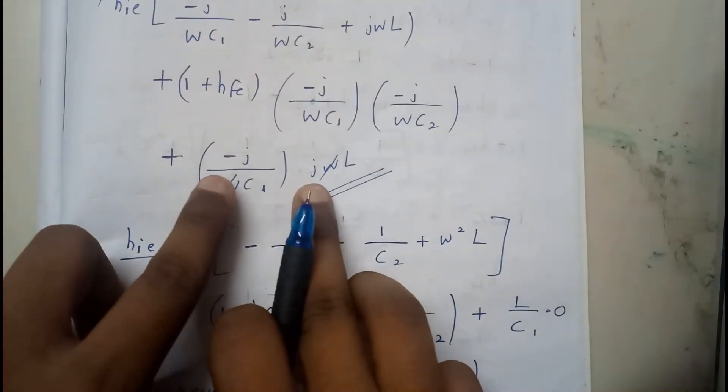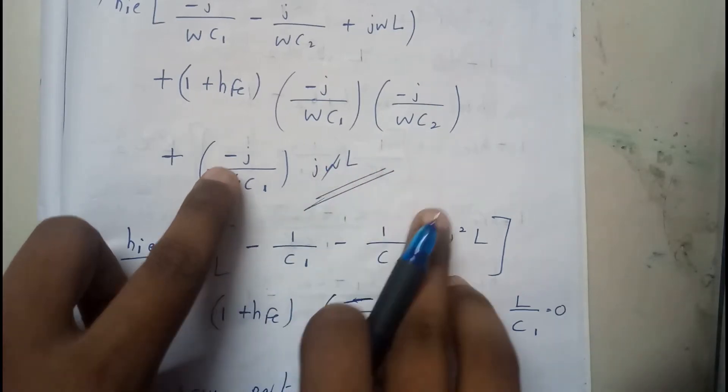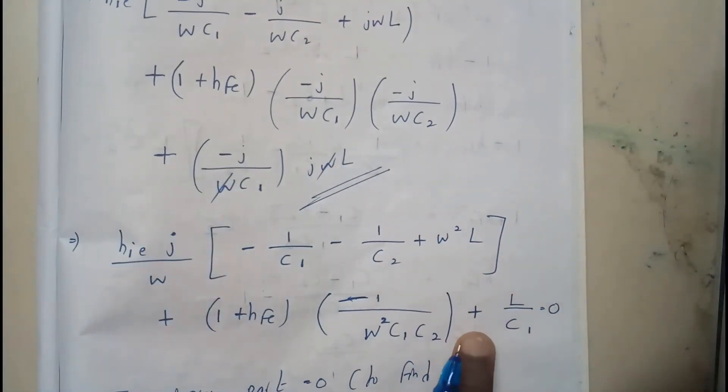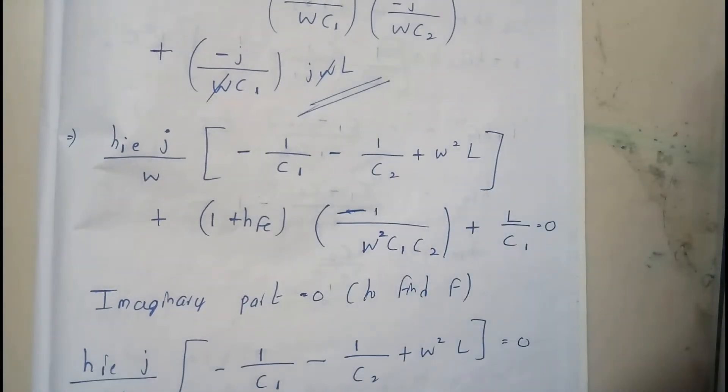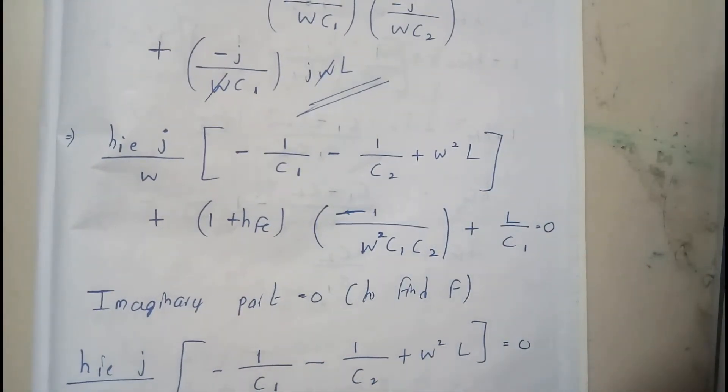Plus, here we are having J into J, that is minus 1 minus into minus plus. So we are going to get plus. So this is our imaginary part. So if we make the imaginary part equals to 0, we are going to get F.